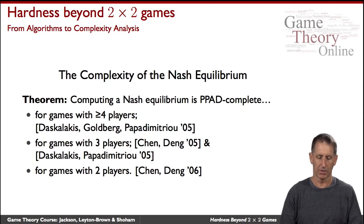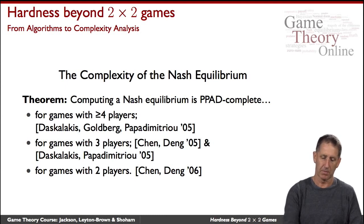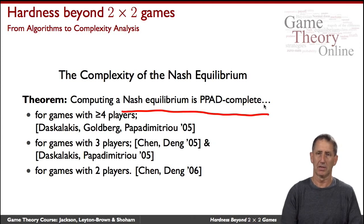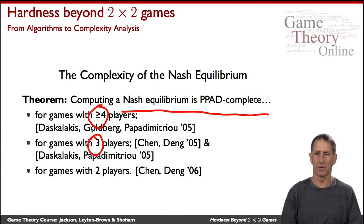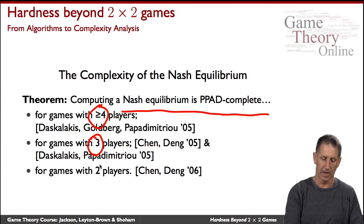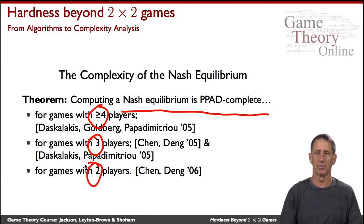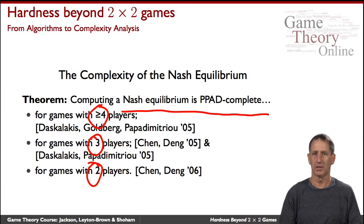It was shown that the problem of computing a Nash equilibrium is complete for the class PPAD — that is, it's the hardest among all problems in that class. This was initially proved for four players, then for games with three or more players, and finally in 2006 for all classes of games. So we widely believe the problem is not polynomial — we cannot prove it — but we do know where it resides within the complexity hierarchy.